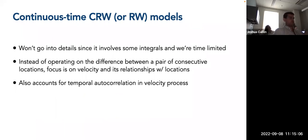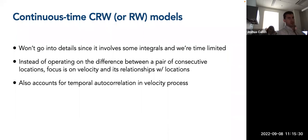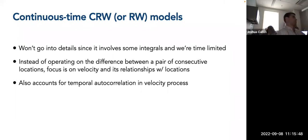That does it for discrete time models, which I won't actually be using in this presentation today — but they are very common and easier to describe than the calculus involved in some continuous time models. Continuous time models operate in a similar way but focus on velocity and its relationship to locations rather than differences between locations, and are able to account for temporal autocorrelation in the velocity process.